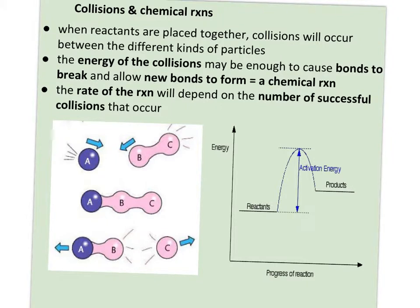So when reactants are placed together, collisions occur between the different kinds of particles. But many of these collisions do not create product. In fact, a very small number of collisions typically create product. So figuring out a way to make the collisions more successful is how you make a reaction happen faster or increase the rate.